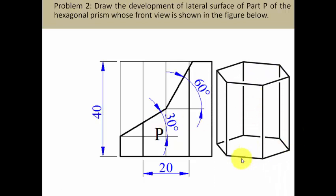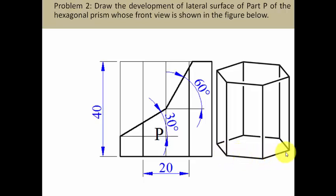It looks something like this. You can see these are the four edges which can be seen from the front: 1, 2, 3, and 4. Now the question you should ask yourself is from which view you can see the true shape of the base. The true shape of the base can only be seen from the top, and hence you have to begin by making the top view first. This arrow is for the top view and this one is for the front view.